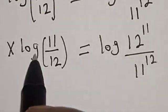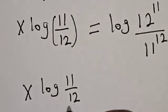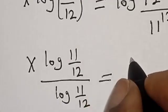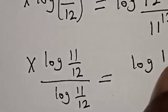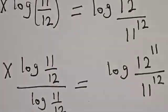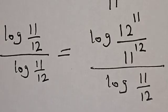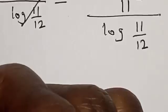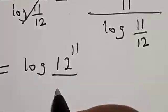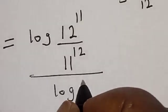Now let's divide both sides by log 11 over 12 because we are looking for the value of s. Then we have s times log 11 over 12 divided by log 11 over 12 is equal to log 12 raised to power 11 divided by 11 raised to power 12, all divided by log 11 divided by 12. This will cancel, so s is equal to log of 12 raised to power 11 over 11 raised to power 12, divided by log 11 divided by 12.